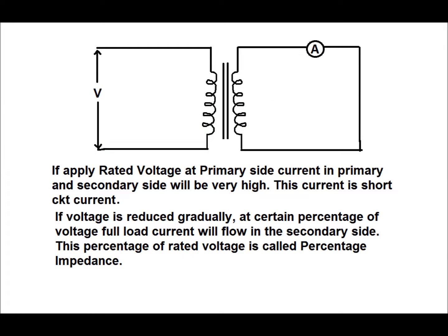In this diagram of the power transformer, a primary voltage is applied in the primary side and current is measured in the secondary side in short circuit condition of the secondary side. Rated voltage is given in the primary side and the measured current is very high — this current is the short circuit current. If the voltage is gradually reduced from the rated voltage, at a certain percentage of the voltage, full load current will flow in the secondary side. This percentage of the rated voltage is called the percentage impedance of the transformer.